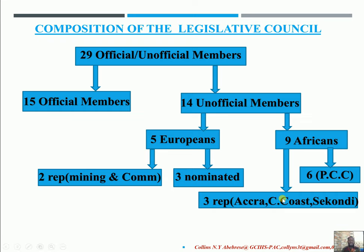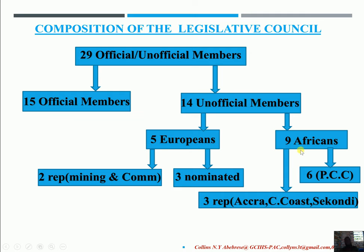Looking at this composition, it is clear that Europeans were still in the majority. Out of the 14 unofficial members in the legislative council, only nine were Africans — six chiefs and three educated elite. Apart from Europeans being the majority, because of the introduction of indirect rule, more chiefs (six) were appointed as opposed to three educated elite. This emphasized the fact that Guggisberg was really interested in the indirect rule system and was prepared to make it work in the country.